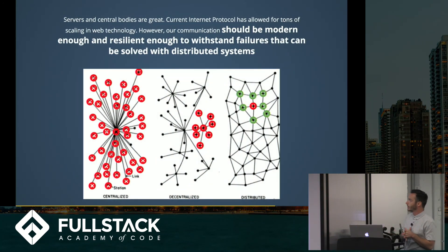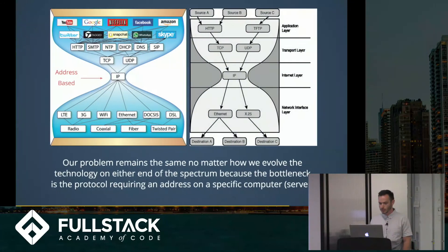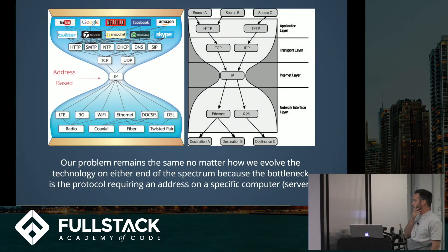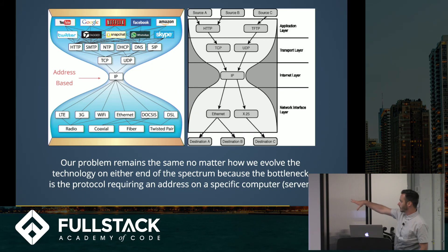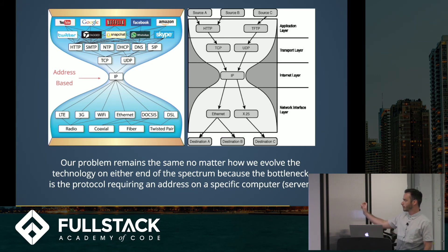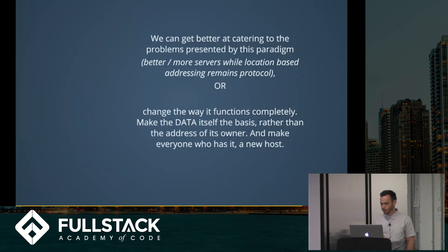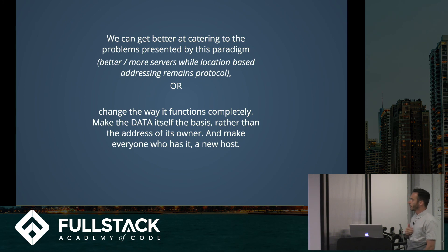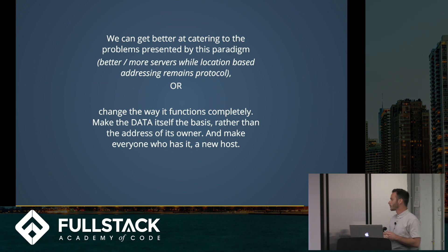Servers and central bodies are great — current internet protocols allowed tons of scaling and web technology. However, our communication should be resilient enough to withstand failures that can be solved with distributed systems. The bottleneck is the IP protocol, which is address-based, requiring an address on a specific computer or server. We can either get better at catering to that paradigm, or change the way it functions completely — make the data itself the basis rather than the address of its owner, and make everyone who has it a new host.